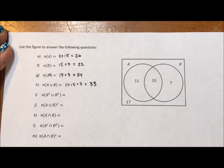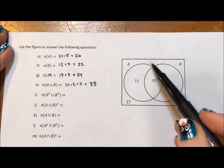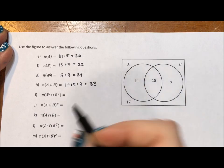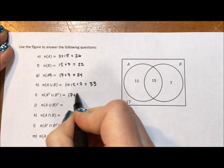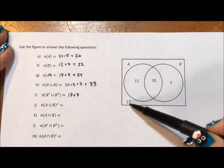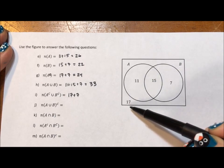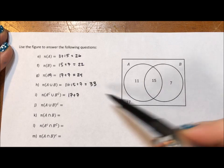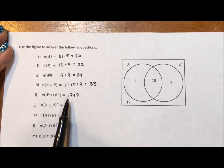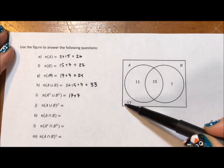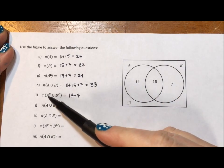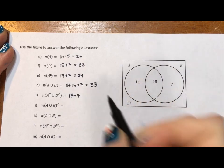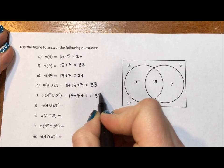Then it says the number in the complement of A, union complement of B. Well, the complement of A, we've already done that, that's the 17 plus 7. The complement of B is 11 and 17, but we don't add the 17 twice. That region is already represented in that 17. So we have the 17 and the 7 coming from the complement of A. The complement of B adds another 11. That puts us at 35.